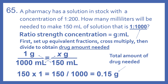We're going to work with this 1 to 1000 concentration. So 1 gram per 1000 milliliters equals X grams per 150 milliliters. If we cross multiply and divide to solve, we have 150 times 1 is 150, divided by 1000, which equals 0.15 grams. That is our total amount of drug needed.